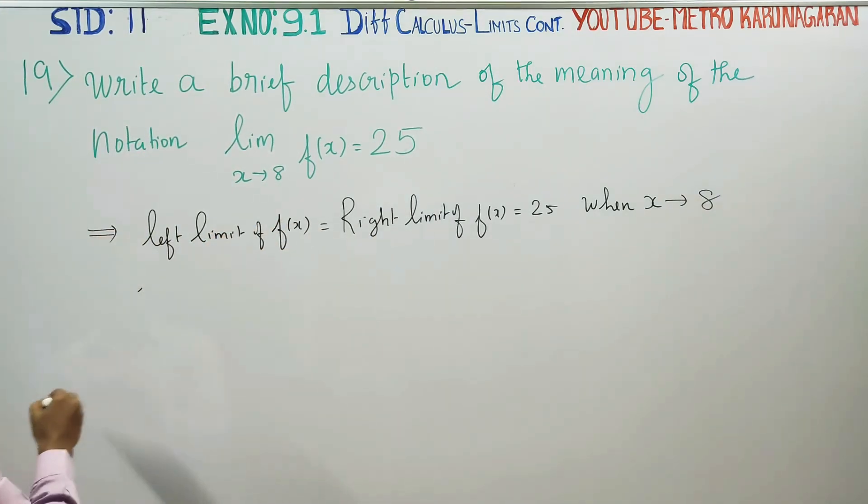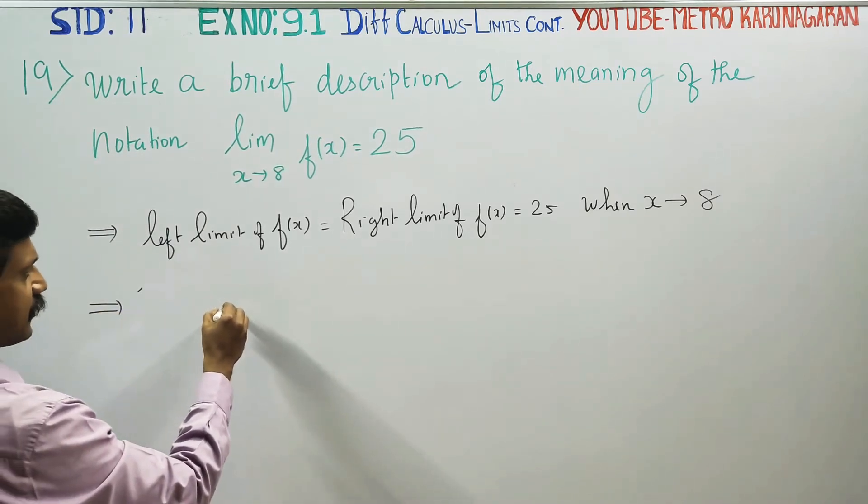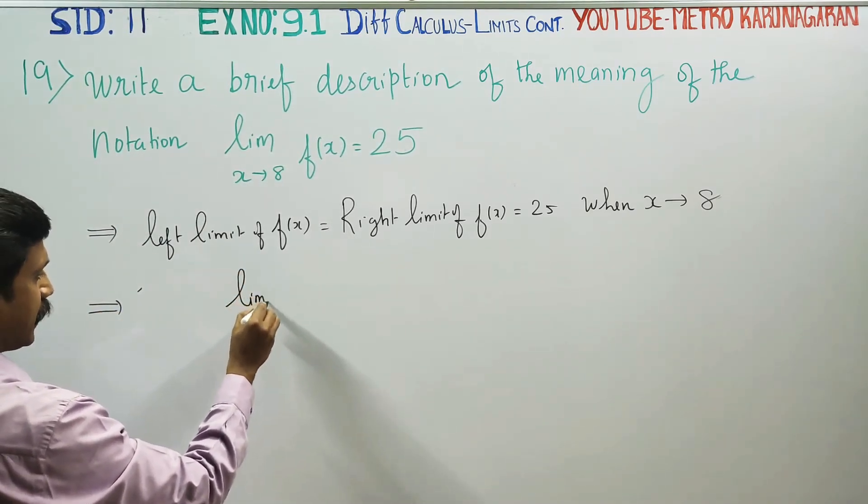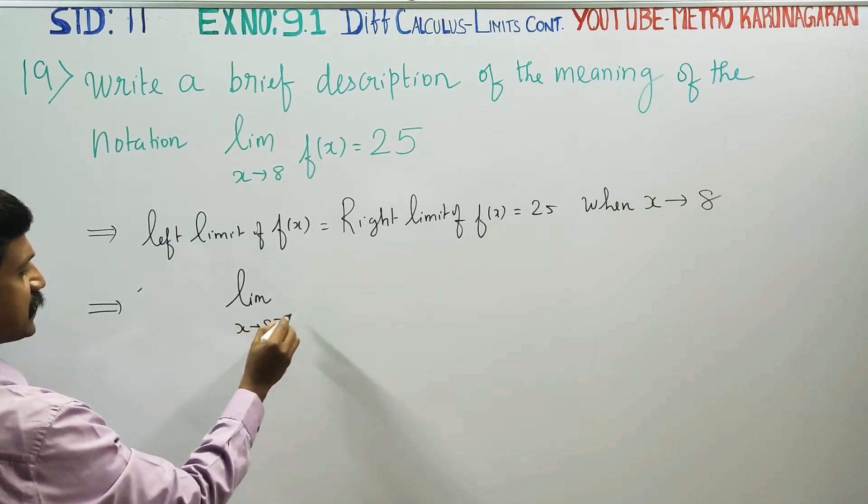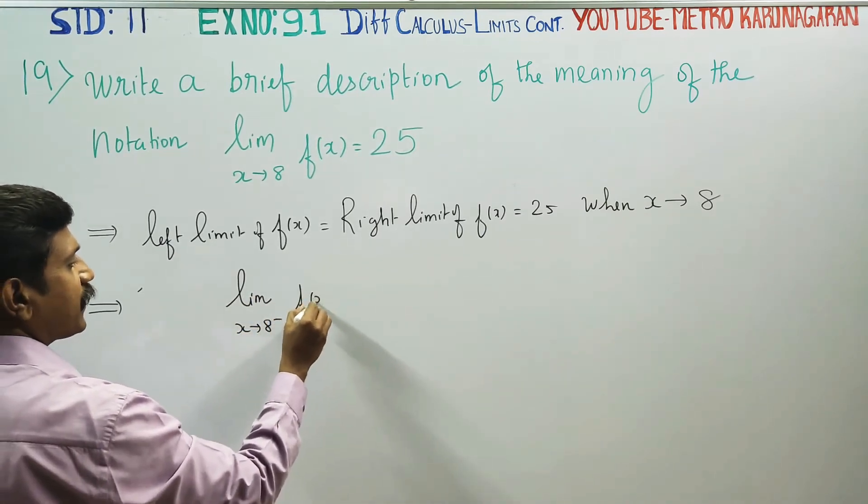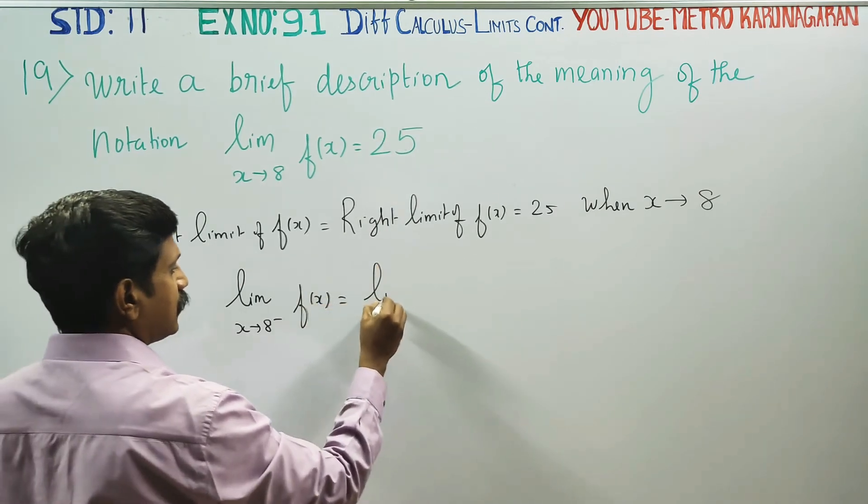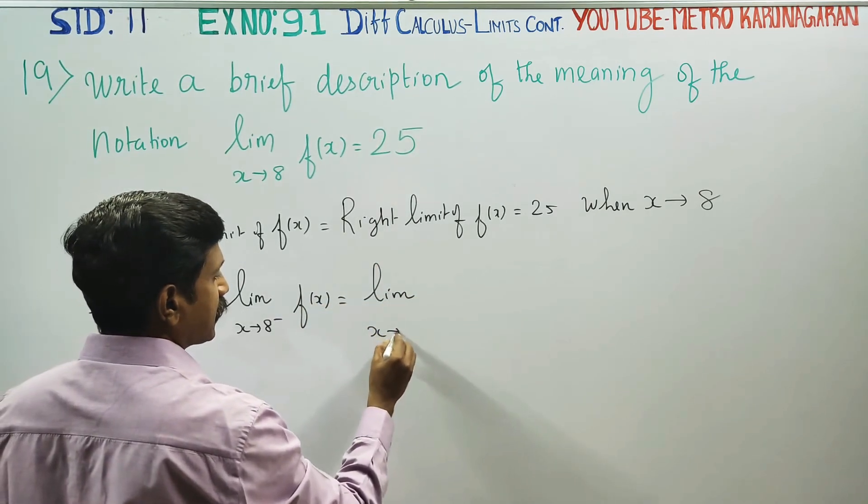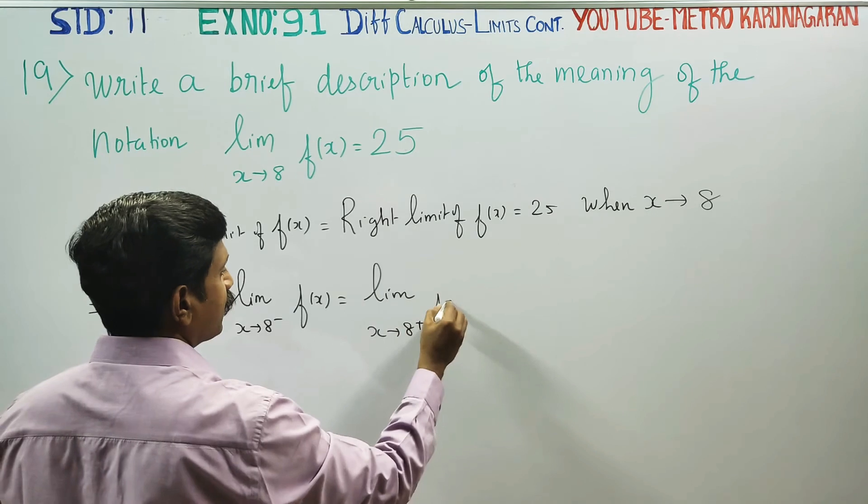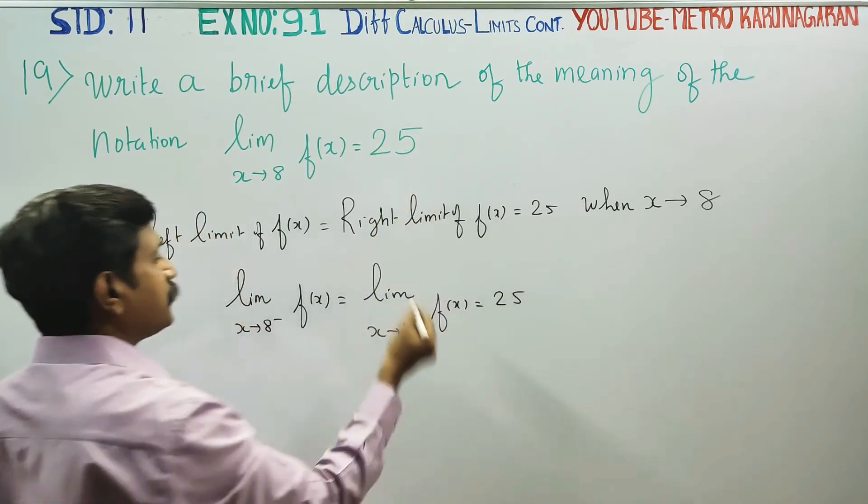This is the notation. Left limit of x turns to 8 minus, f of x is equal to limit right limit of x is equal to 25. This is the meaning.